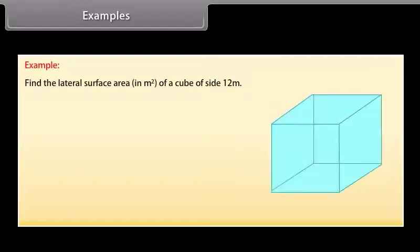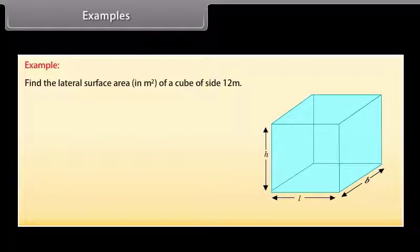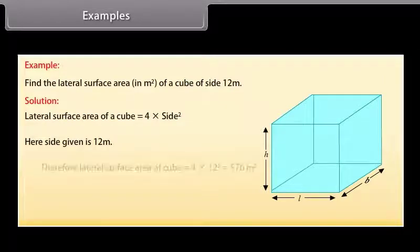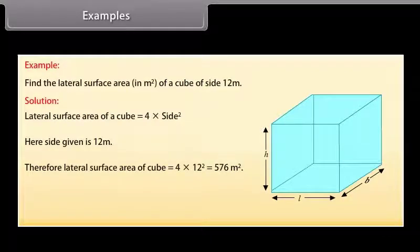Example: Find the lateral surface area in meter square of a cube of side 12 meters. Solution: We know that the lateral surface area of a cube = 4 × side². Here side = 12 meters. Therefore, lateral surface area of cube = 4 × 12² = 576 meter square.